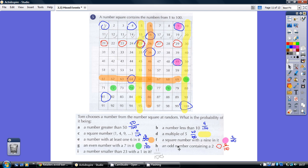An even number with a seven? Well, they're the green dots, one, two, three, four, five. And an odd number containing a two? Well, they're the red circles. There's five of them. And a number smaller than 23 with a one in it? Well, the gray ticks. There are 11 of those.